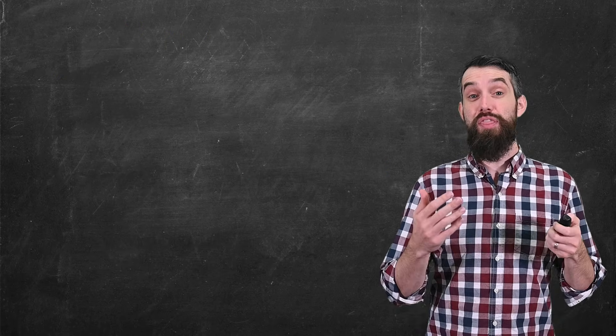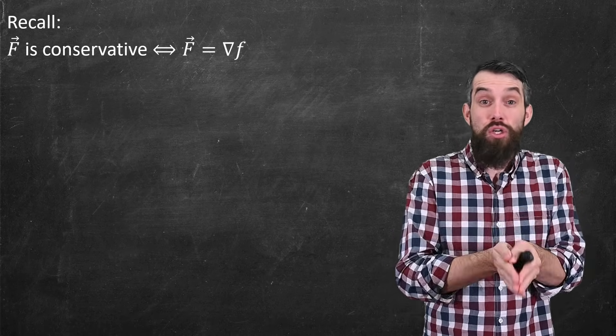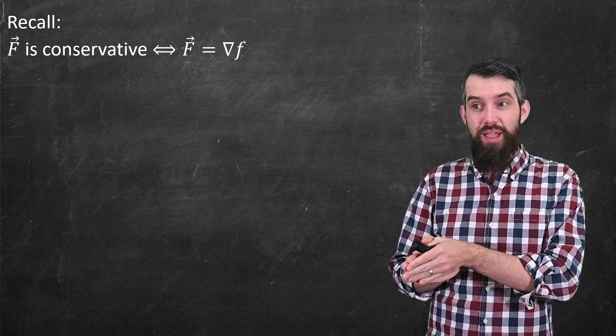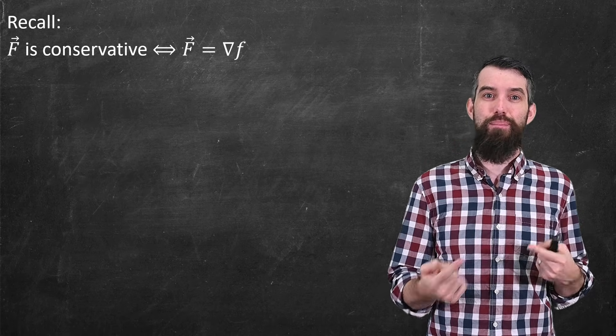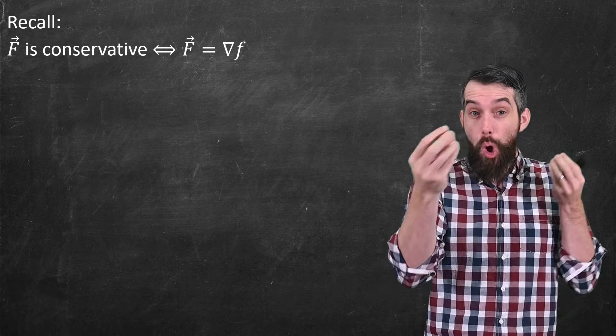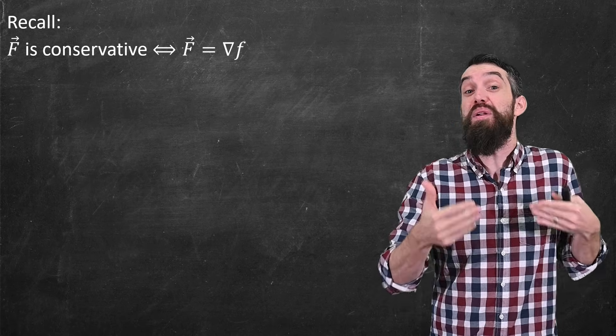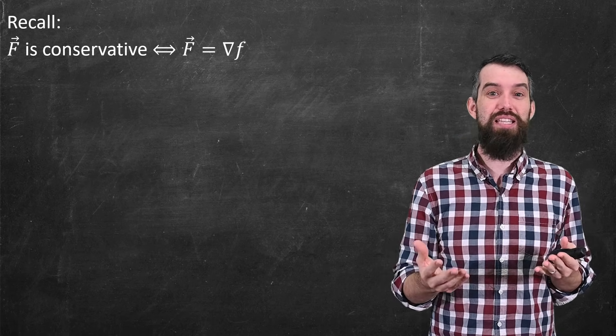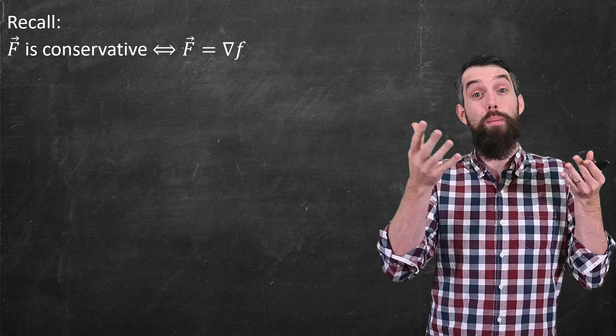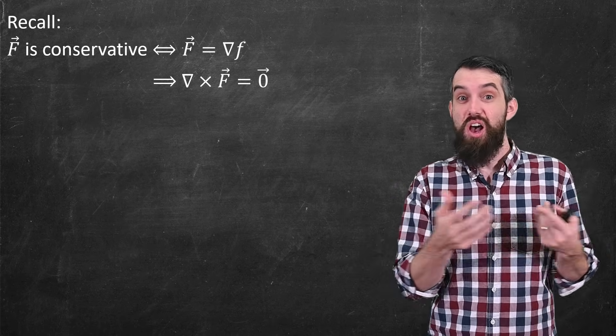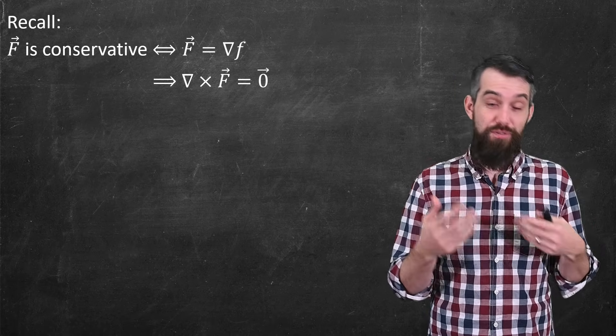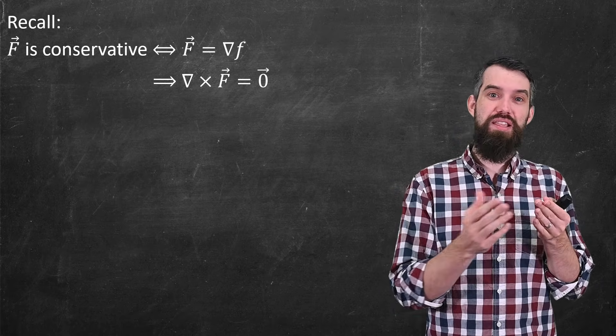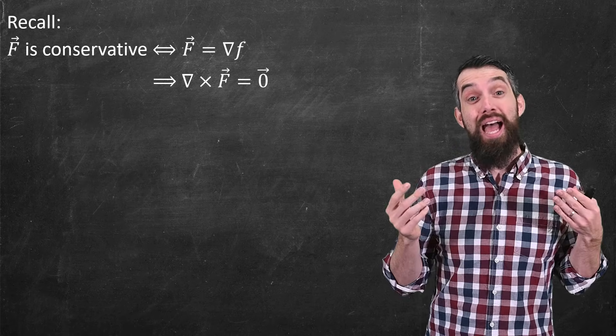we've seen previously that the gradient of f was associated to conservative vector fields. So a vector field was conservative if it could be written as the gradient of a scalar potential function. And indeed, conservative was a really nice property because it meant that any line interval was independent of the path. It only depended on the endpoints. We had, for example, the fundamental theorem of line integrals that only applied for conservative fields. And conservative fields are everywhere because things like, for example, the gravitational field or the electric field are both conservative fields. So because of the computation we just did that showed that the curl was going to be zero if you had a field that could be written as the gradient of f, aka conservative.